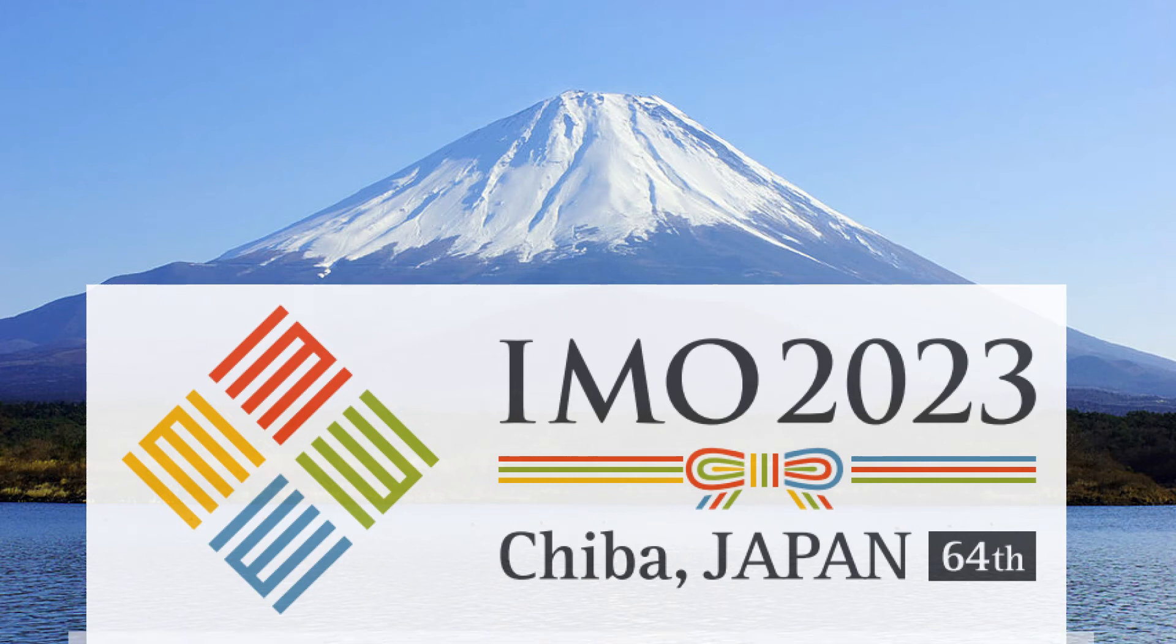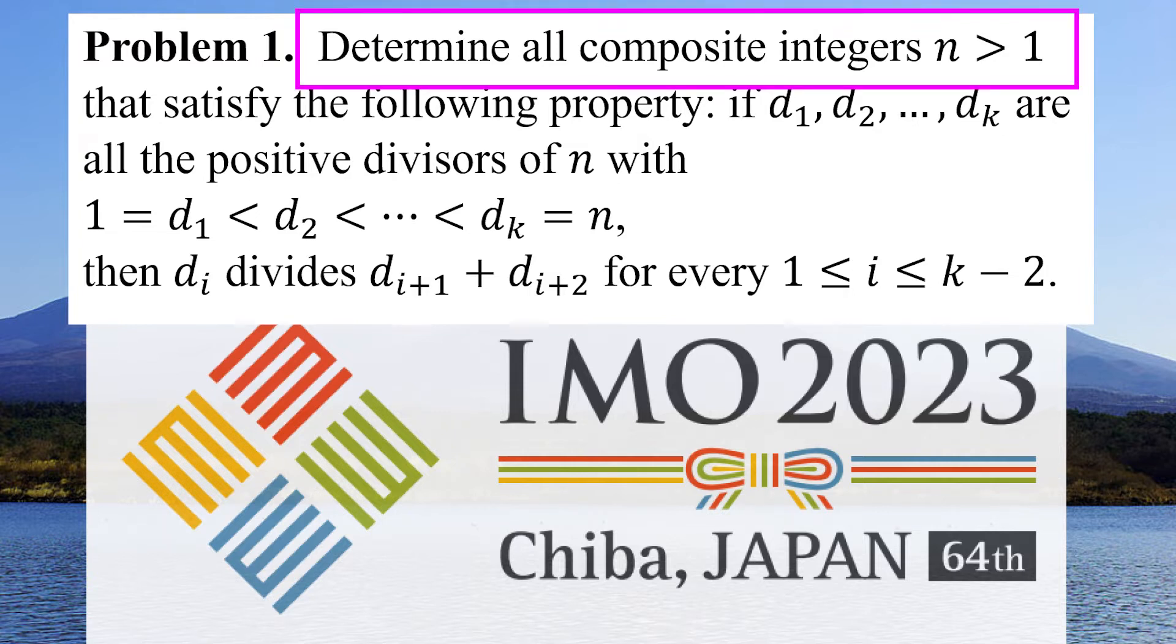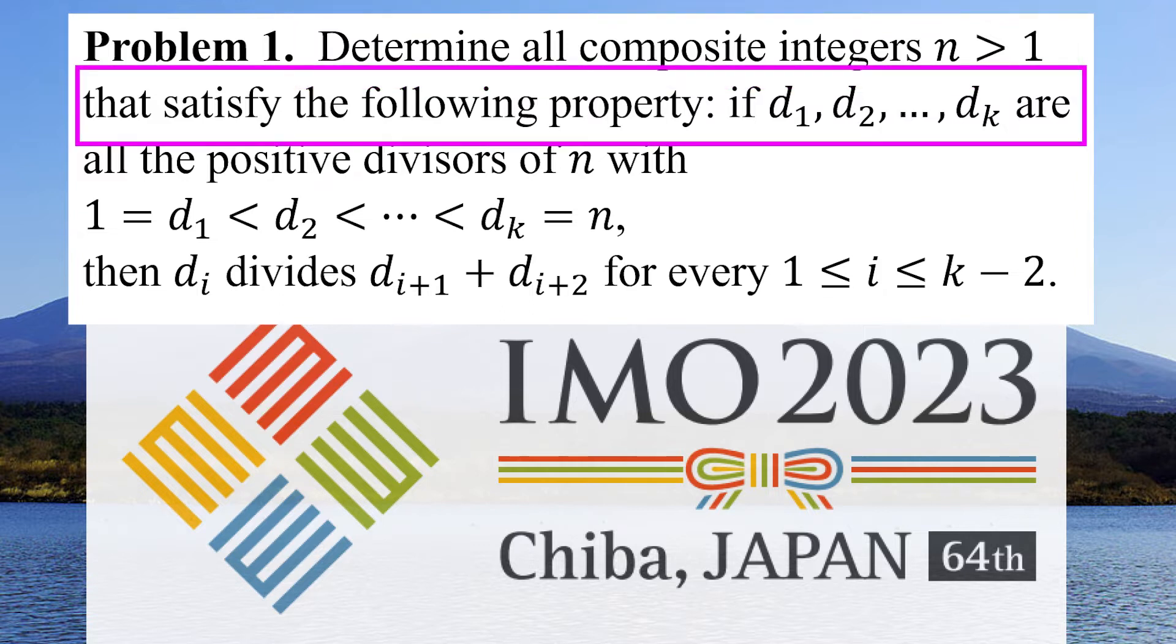Here is problem 1 of the 2023 International Math Olympiad. It's a number theory problem. Determine all composite integers n greater than 1 that satisfy the following property.